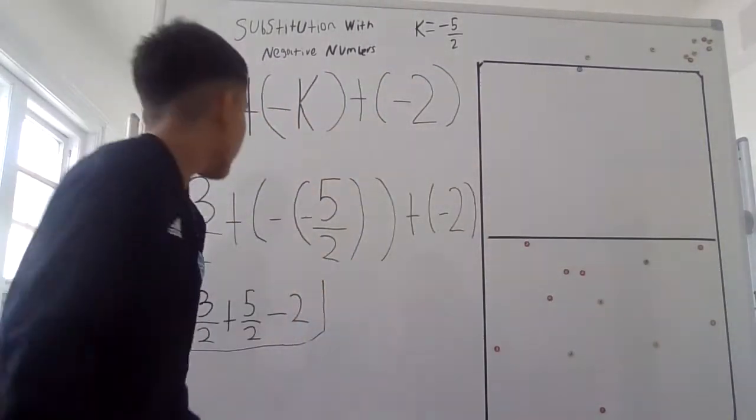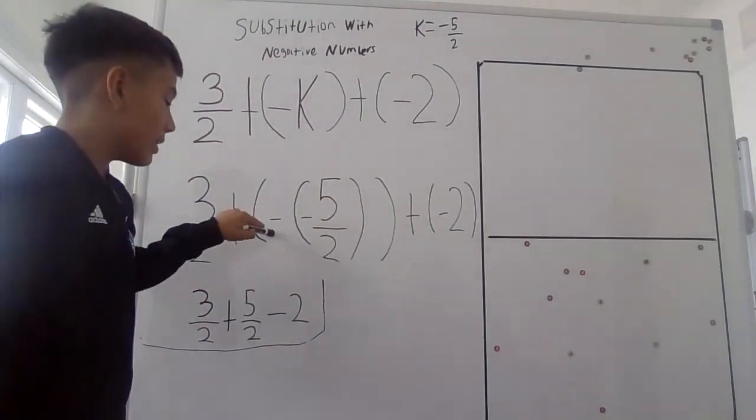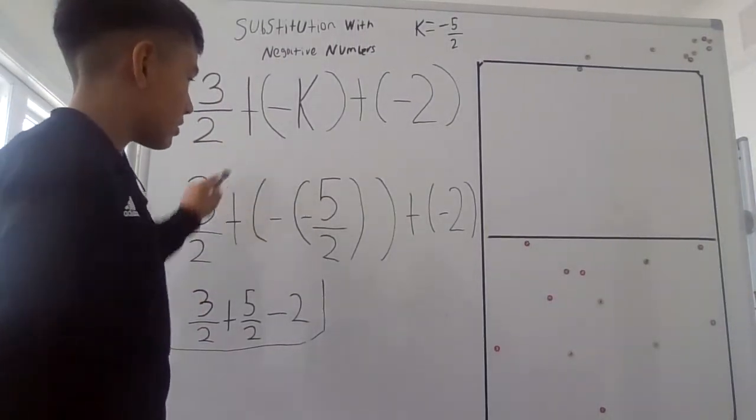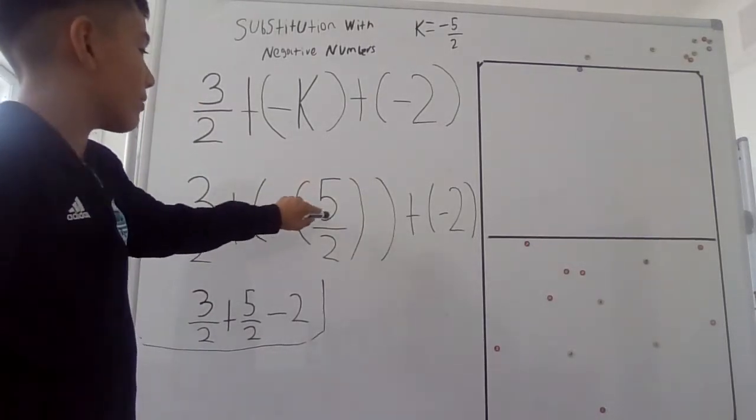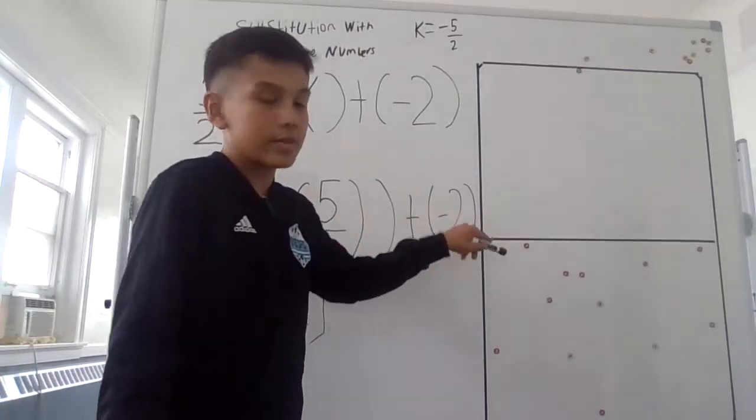So I rewrote it into 3 over 2 plus negative, or these parentheses stay the same. I keep the negative there, and then it's negative 5 over 2 plus negative 2.